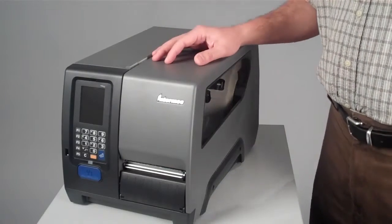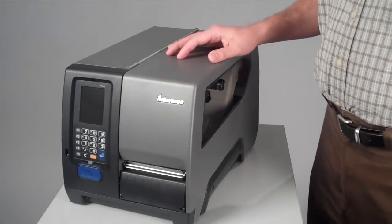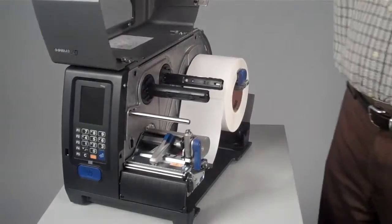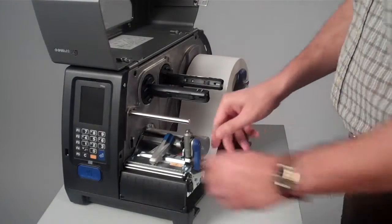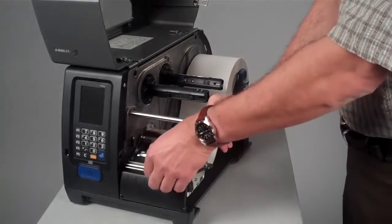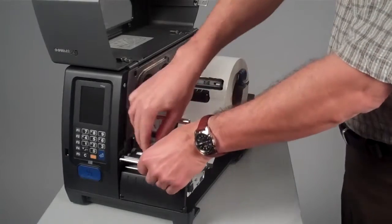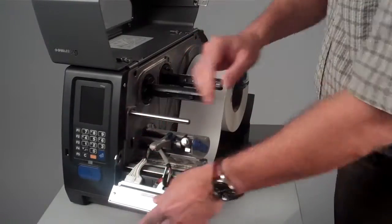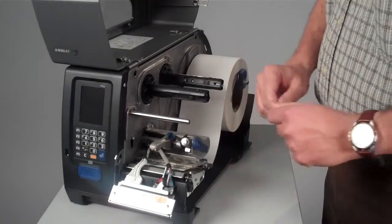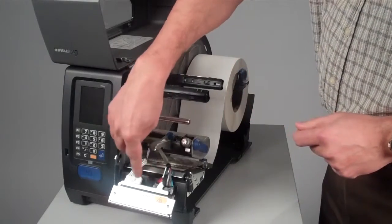Let us review now how we replace the print head on Intermec PM43 printer. Intermec PM43 print head is a magnetic print head, easily removable without any tools, jigs or most importantly loose parts. The only thing you need to do is disconnect these two cables.